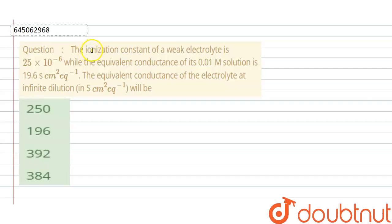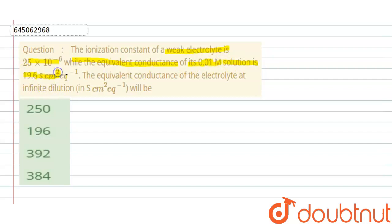Hi everyone. The question is: the ionization constant of a weak electrolyte is 25×10⁻⁶, while the equivalent conductance of its 0.01 molar solution is 19.6 S·cm²·eq⁻¹. The equivalent conductance of the electrolyte at infinite dilution in S·cm²·eq⁻¹ will be?